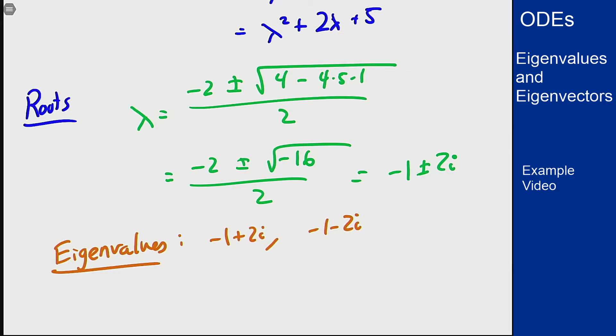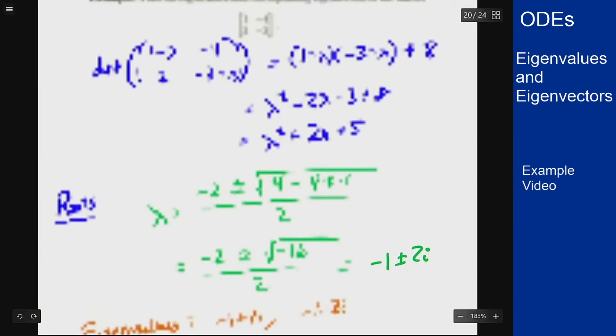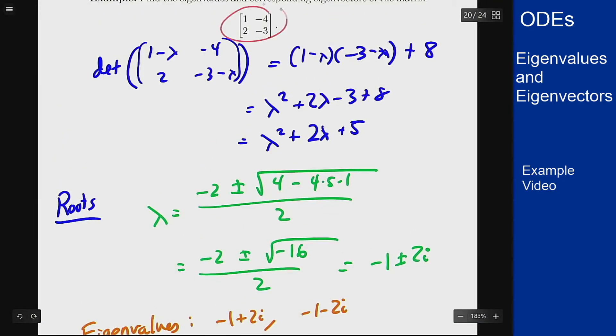I want to find the eigenvectors from this. Now because we have a real matrix, this matrix up here is entirely real valued, there's only real numbers in it, we know that the eigenvectors for the conjugate eigenvalues will also be conjugates. So we only have to find one of these eigenvectors; the other will be the complex conjugate of that.